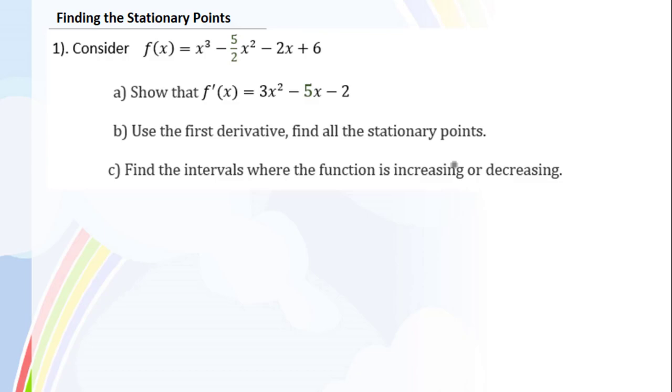This video is about finding stationary points. Consider f of x equals x to the third power minus 5 over 2x squared minus 2x plus 6. Show that f prime of x equals 3x squared minus 5x minus 2.